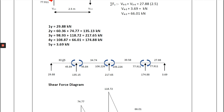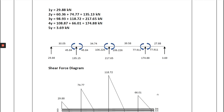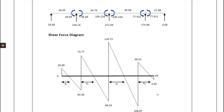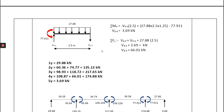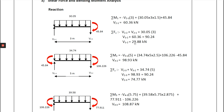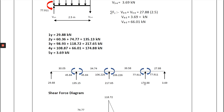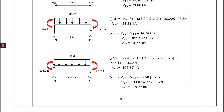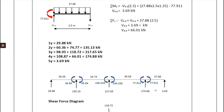We draw the diagram showing the UDL action, support reactions, and end moments at each joint, then draw the shear force diagram. V12 = 29.88 kN, V21 = 60.36 kN, V23 = 74.77 kN, V32 = 98.93 kN — continuing this process across all spans gives the complete shear force diagram.